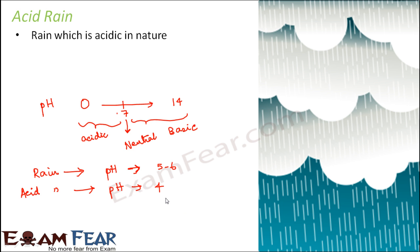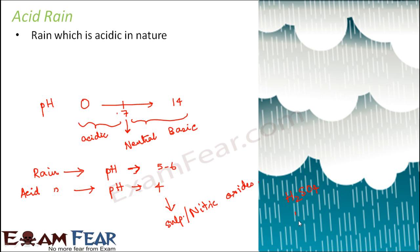Acid rain is acidic due to the presence of various acids — for example, sulfur and nitric oxides. Sulfur and nitrogen oxides react with tiny water droplets to form sulfuric acid and nitric acid. When the rain gets mixed up with sulfuric acid and nitric acid, the rain turns acidic. Rain from these clouds then falls as a very weak acid, and this is called acid rain.